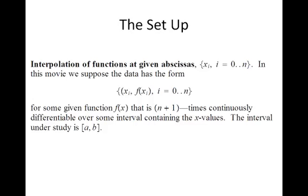So we're going to look at the data as shown there. It's the ordered pairs, x sub i, f of x sub i, from i equals 0 to n.